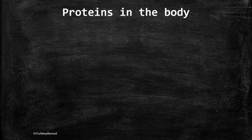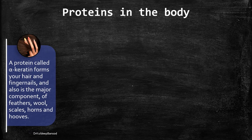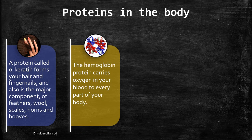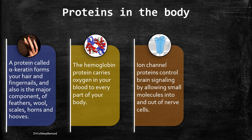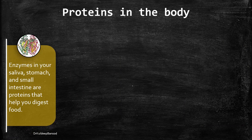This slide represents where proteins are present in the body. Alpha-keratin is the protein present in our hairs and fingernails. They are also a major component of feathers, wool, scales, horns, and hooves of some animals. Hemoglobin is present in the blood and carries oxygen — hemoglobin is also a protein. Ion channels that take part in movement of ions inside or outside of the cell are also protein in nature. Antibodies, which are part of the immunological system, are also protein in nature.